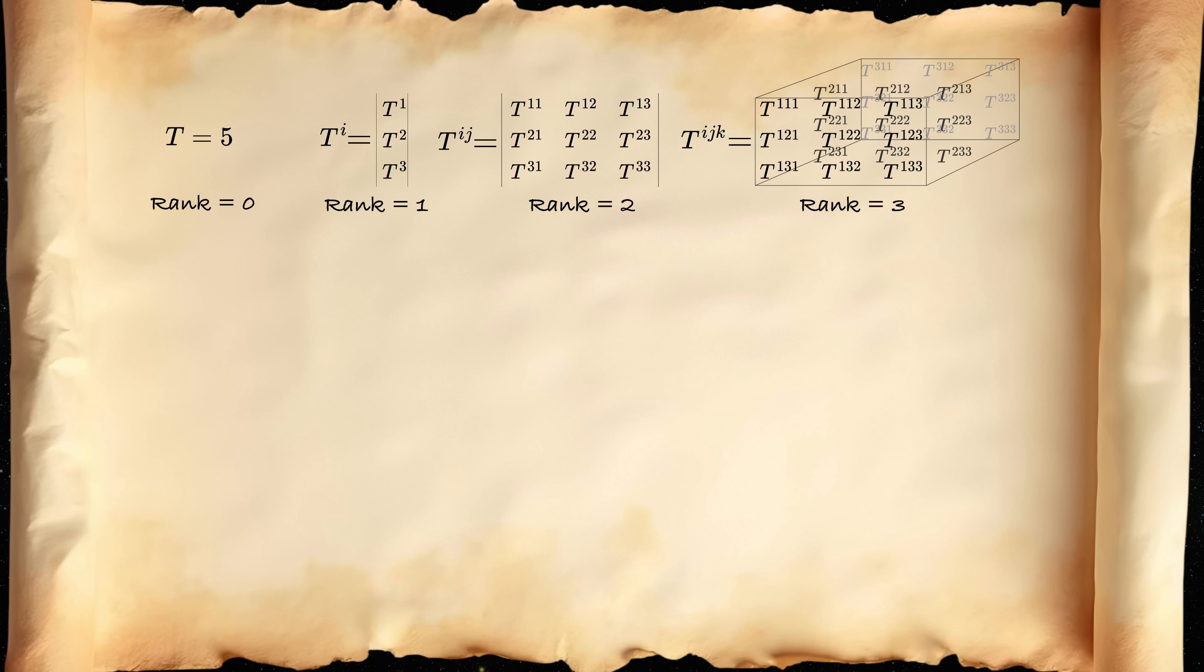Then, by the range these indices run through, you determine the dimension of the tensor quantity. In physics, we use Latin letters for 3-dimensional quantities, which is the x, y, z component. And Greek letters for 4-dimensional quantities in special or general relativity, for t, x, y, z. And finally, how to kinda imagine all of these objects.